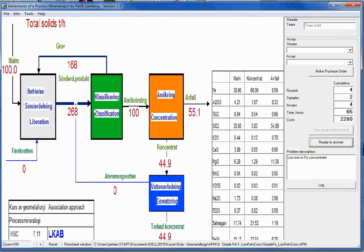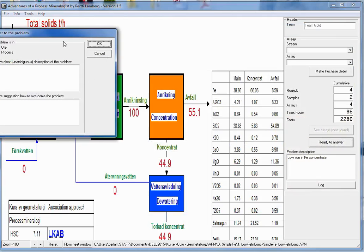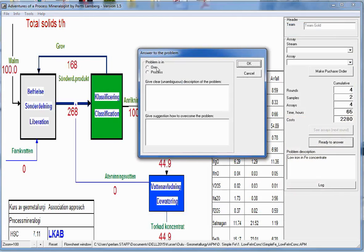Let's say we decide that this is the problem once we have done some additional analysis. So we are ready to answer. So we press this one. And we say the problem is in ore. And then we need to give a clear answer. Liberation of magnetite is poorer than in the base case.